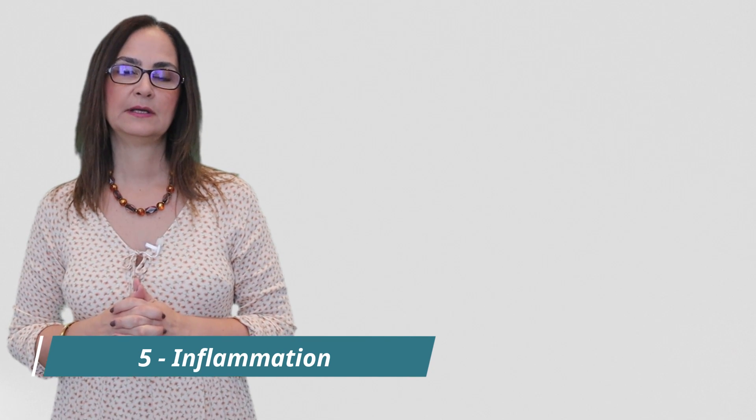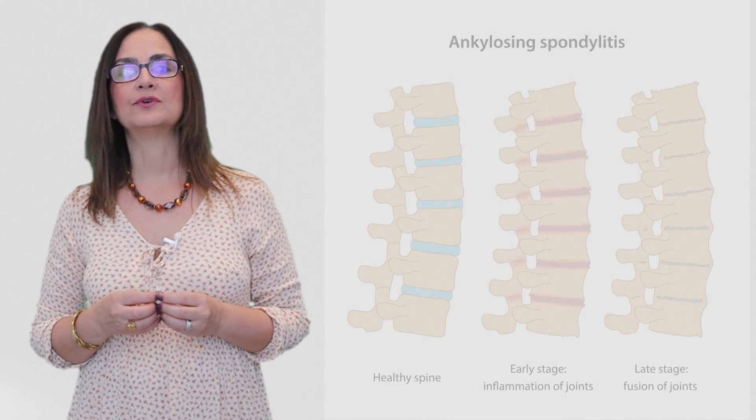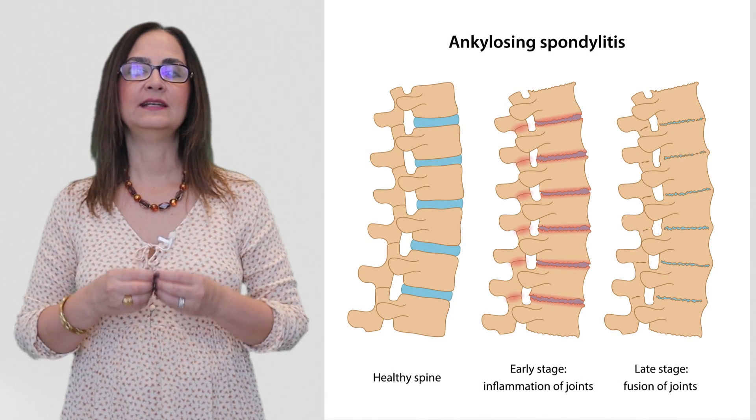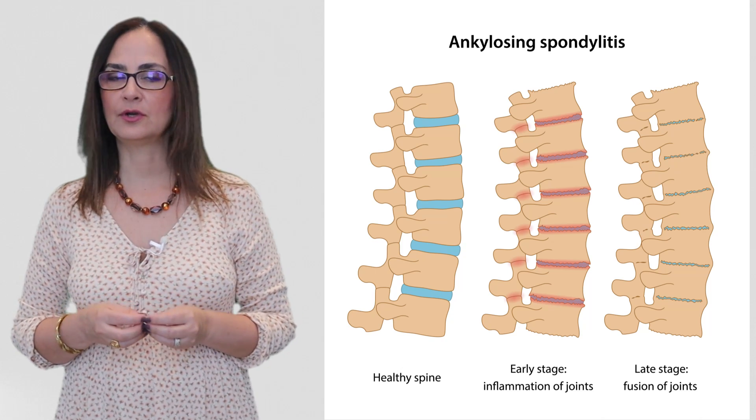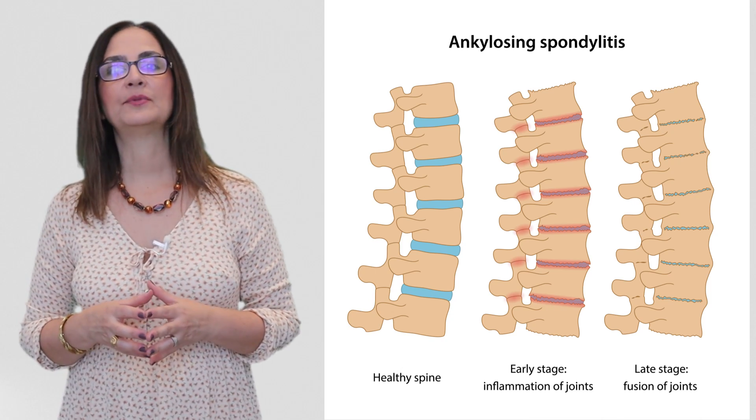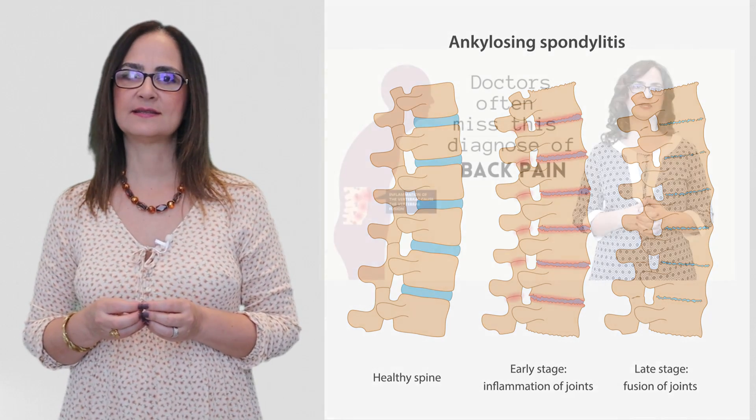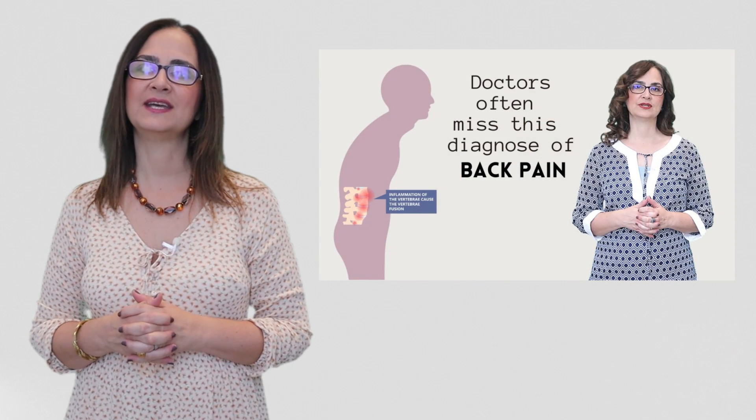Number five: Inflammation. Acute low back pain may be accompanied by signs of inflammation, a condition called spondylitis. This is an inflammatory rheumatological disease. An example is ankylosing spondylitis. Watch my other video about AS here.